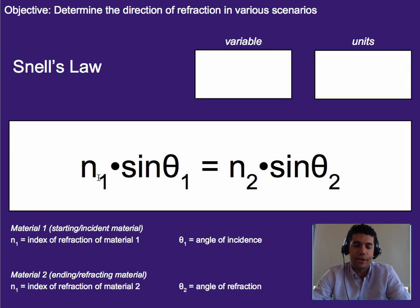Where n1 is the index of refraction or kind of a measure of how fast something or the wave moves in that material. And then theta1 is the first angle of incidence and then this is the material it's going into and the angle of refraction.